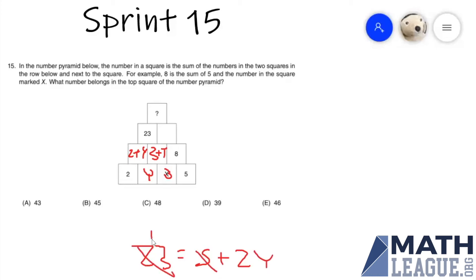Subtracting five from both sides, we get 18. Dividing by two gives us nine, meaning that y equals nine.